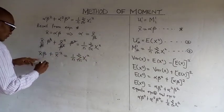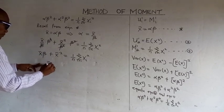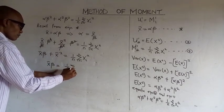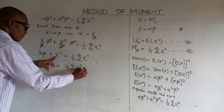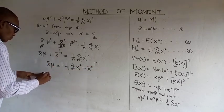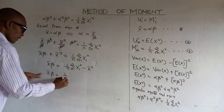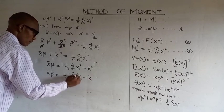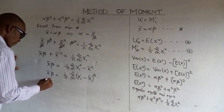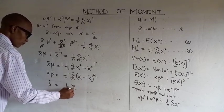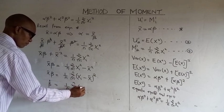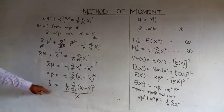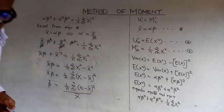After simplification, terms cancel to leave x bar beta plus x bar squared equal to 1 over n summation of x i squared. Moving x bar squared to the other side gives x bar times beta equal to 1 over n summation of x i squared minus x bar squared, which is the same as 1 over n summation of x i minus x bar, all squared. So our beta estimate is 1 over n summation of x i squared.